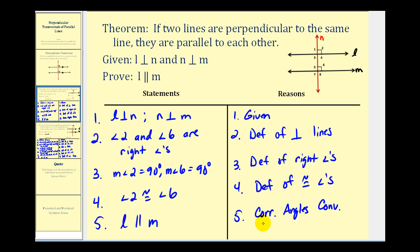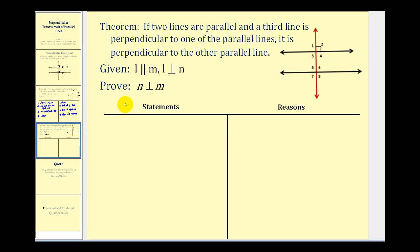Let's take a look at our next theorem. We want to prove: if two lines are parallel and a third line is perpendicular to one of the lines, it is perpendicular to the other line as well. So if we know these two lines here are parallel — line L and line M — and line L is perpendicular to line N, we want to prove that it's also perpendicular to line M.